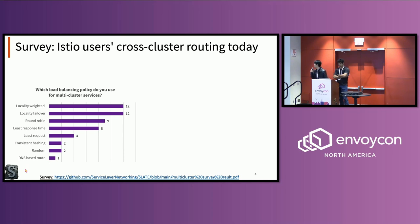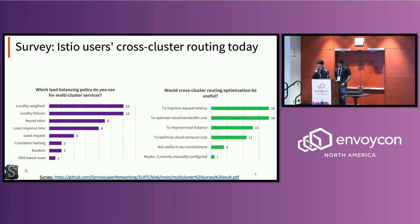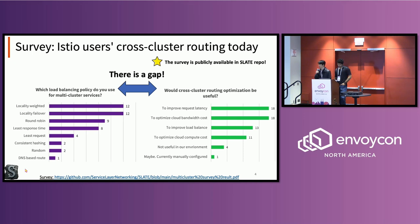More common load balancing policies like round-robin, least response, least request, and so on were also mentioned. The second question was: will it be useful if we provide some way to optimize cross-cluster routing for you? Most people said yes. The reasons were to improve request latency, improve cloud bandwidth cost, load balance, compute cost, and so on. So you can see there's a huge gap between what they're doing right now and what they want. The complete survey is available in our repo.